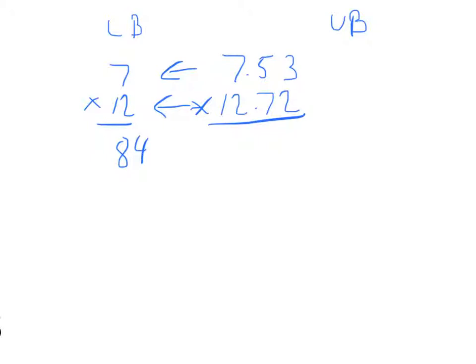So the nice thing about this is we can take some harder problem, 7.53 times 12.72, and do the same calculation with our lower bound. We'll round down to 7 and 12. So we know that our lower bound is 84. So our answer has to be more than that.